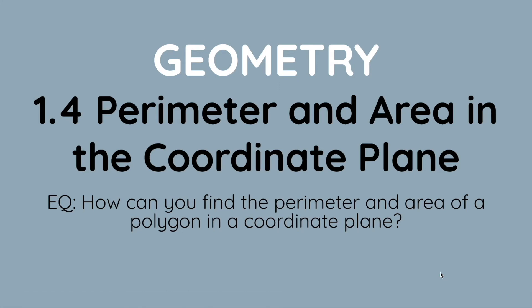Hello everyone, today we will be going over Geometry Chapter 1, Section 4 of the Big Ideas Math Common Core High School textbook. Our topic for today is perimeter and area in the coordinate plane, and our essential question is how can you find the perimeter and area of a polygon in a coordinate plane?